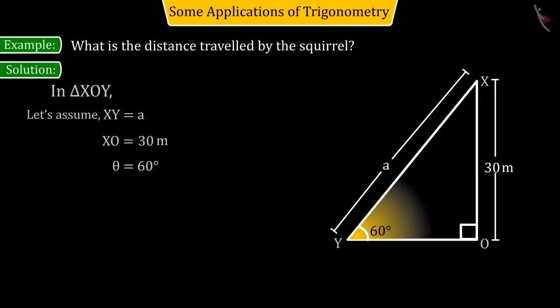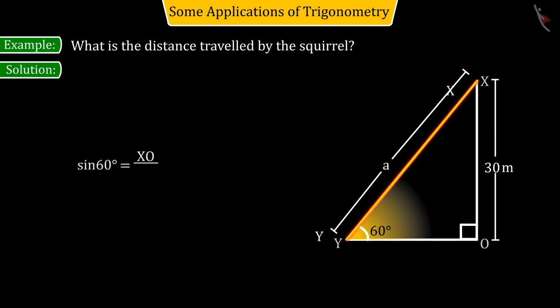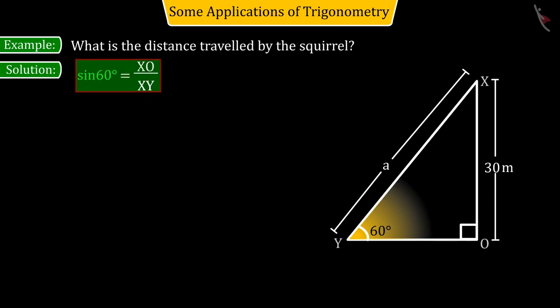Here, from the obtained figure, we get the ratio of the side opposite to theta angle and the hypotenuse, giving us sine 60 degrees equal to XO divided by XY.